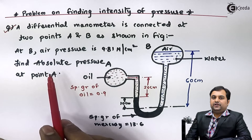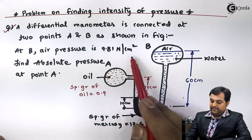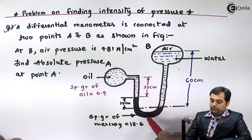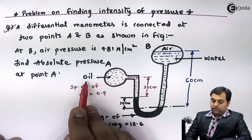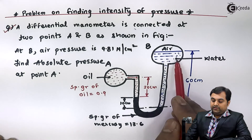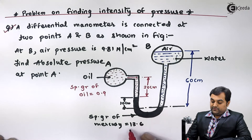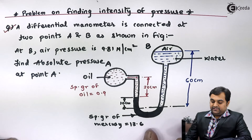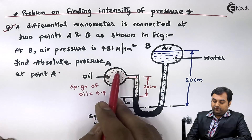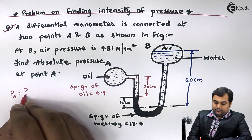Based on this question we have to write the data. As we see in the diagram, at A and B there are two different pipes, and to those pipes a differential U-tube manometer is connected. On the left hand side we have oil whose specific gravity is 0.9. On the right hand side we have water as well as air. We also have mercury whose specific gravity is given as 13.6. The question is to find the absolute pressure at point A, which means we have to find the pressure of oil.